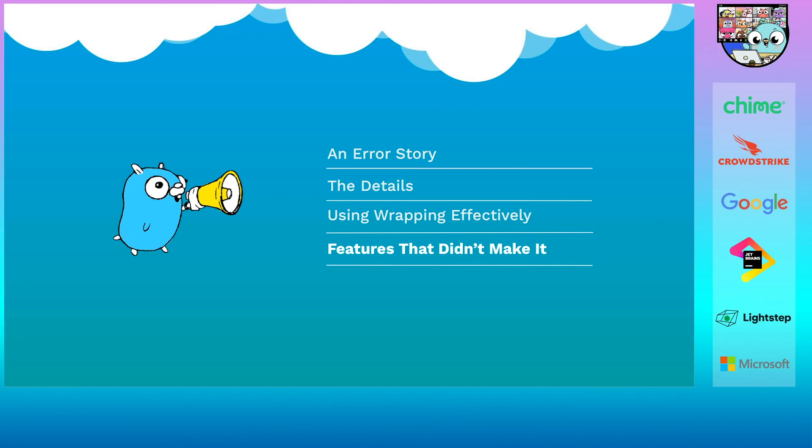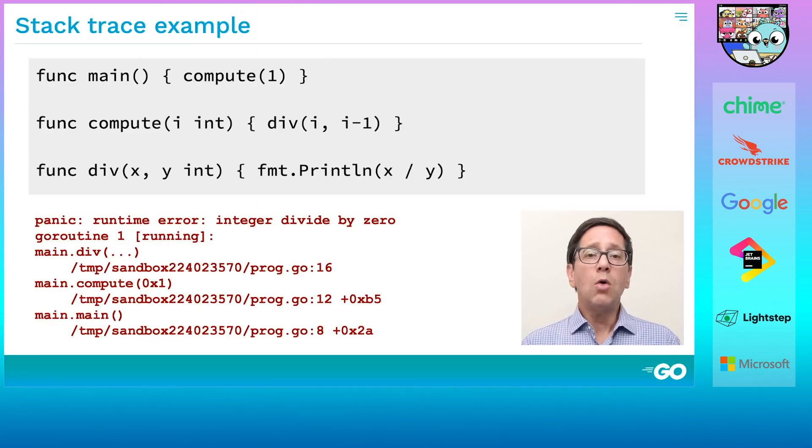Now I'd like to talk about two features that were part of the original draft design on error inspection, but that were removed before Go 1.13 was released. The two features are stack traces and error formatting. Let's start with stack traces. Now Go already gives you a stack trace when there's a panic. Here's a simple program along with the stack trace you get when you run it in the playground. The stack trace tells you the name, file, and line of each function on the stack when the panic happens. The line numbers are off here because the code I'm showing you is a condensed form of the actual program.